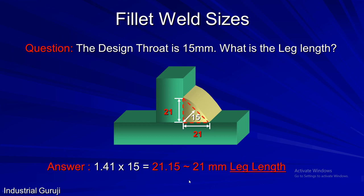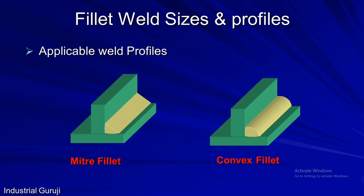These are the ways to calculate throat and leg length — they are simple and quite well known in welding. However, the relations between leg length and throat we have seen so far are applicable only to mitre and convex fillet welds. The above relation does not apply to concave fillet welds as their cross-section is not an isosceles right-angle triangle.